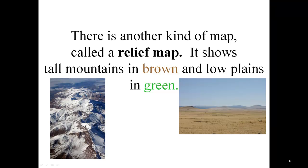There is another kind of map called a relief map. It shows tall mountains in brown and low plains in green.